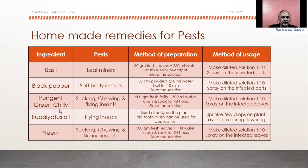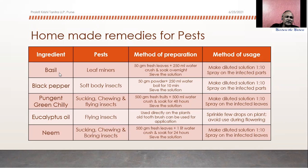Certain home remedies are suggested which are readily available at home or can be sourced from the market, along with the respective problems they treat and how to prepare and use them. Examples include basil, black pepper, green chili, eucalyptus, neem, and many others. A detailed account of these remedies is available in the book; here just a few examples are mentioned.